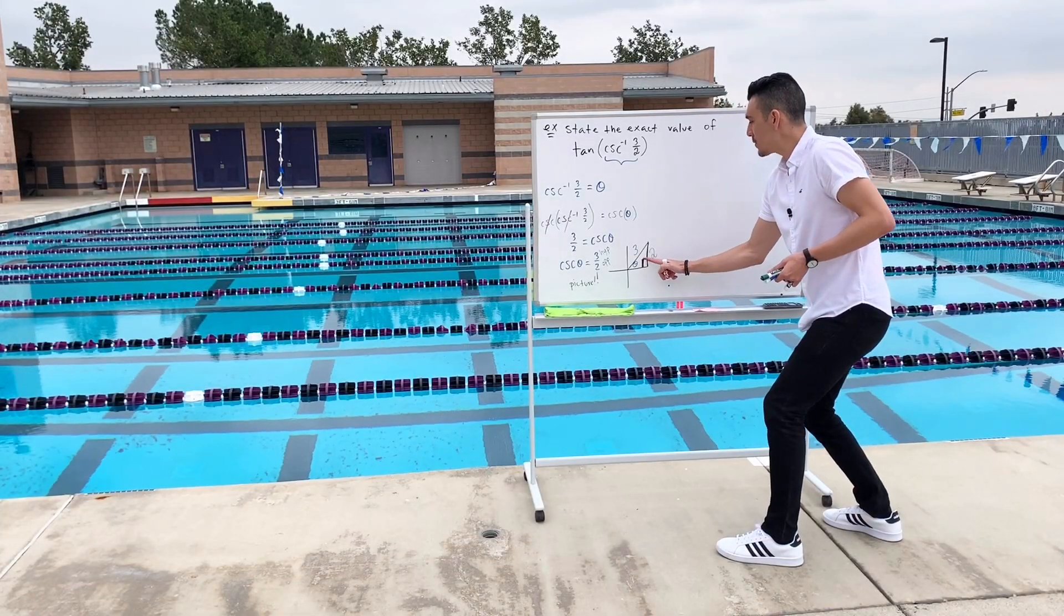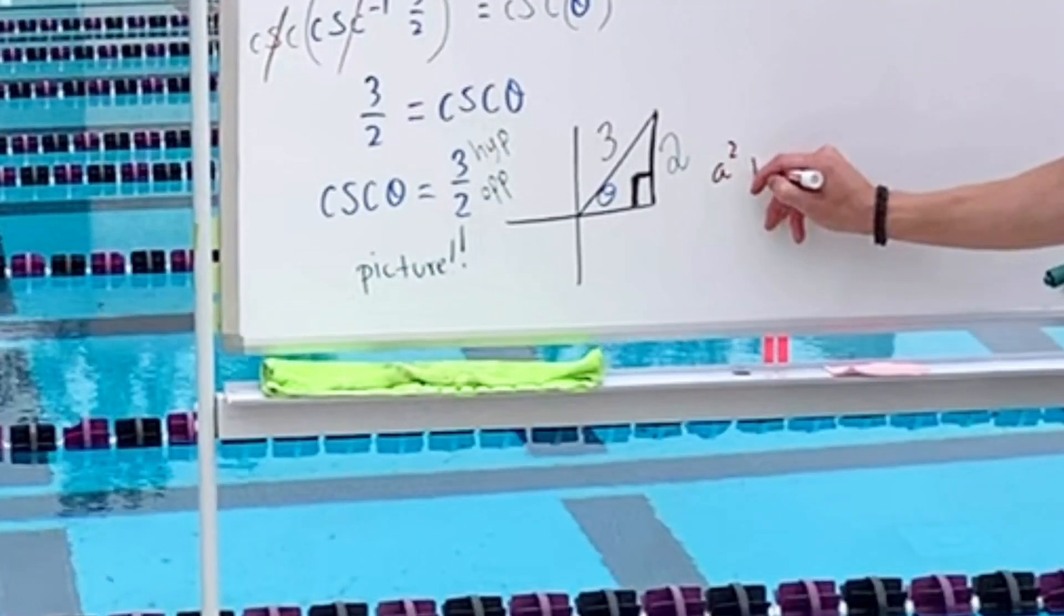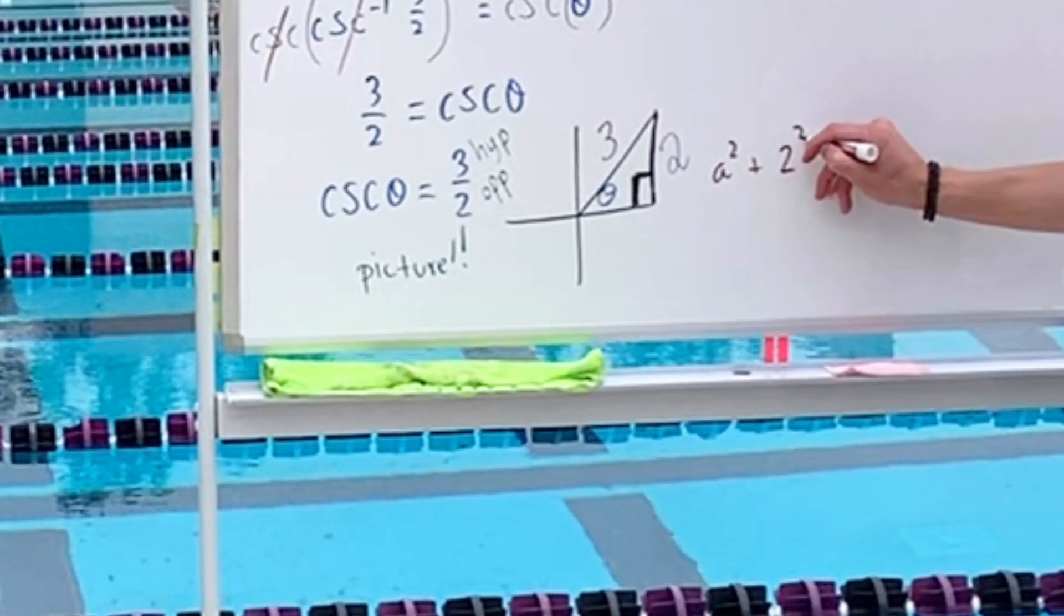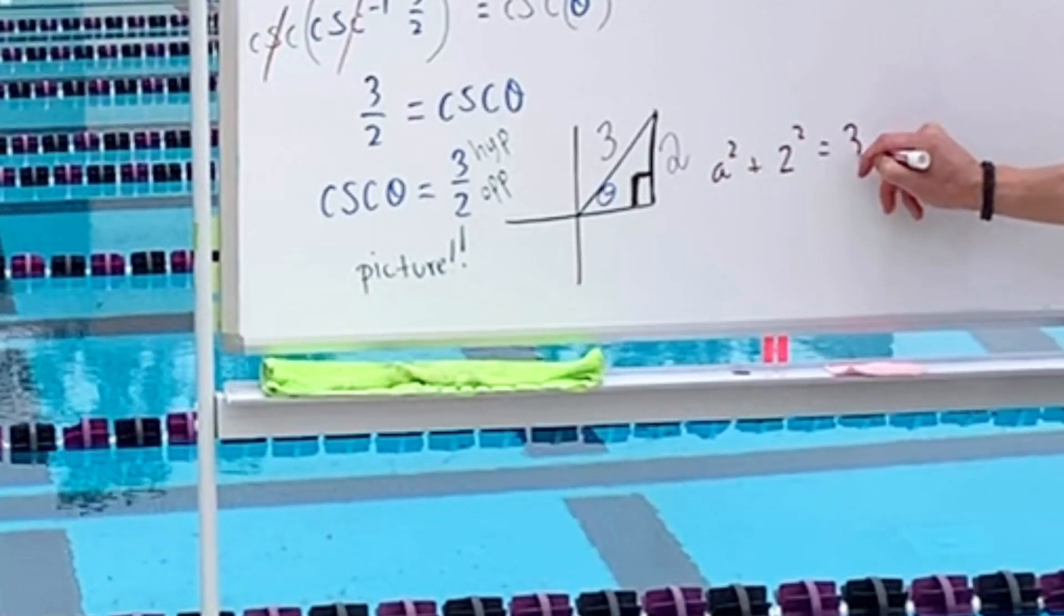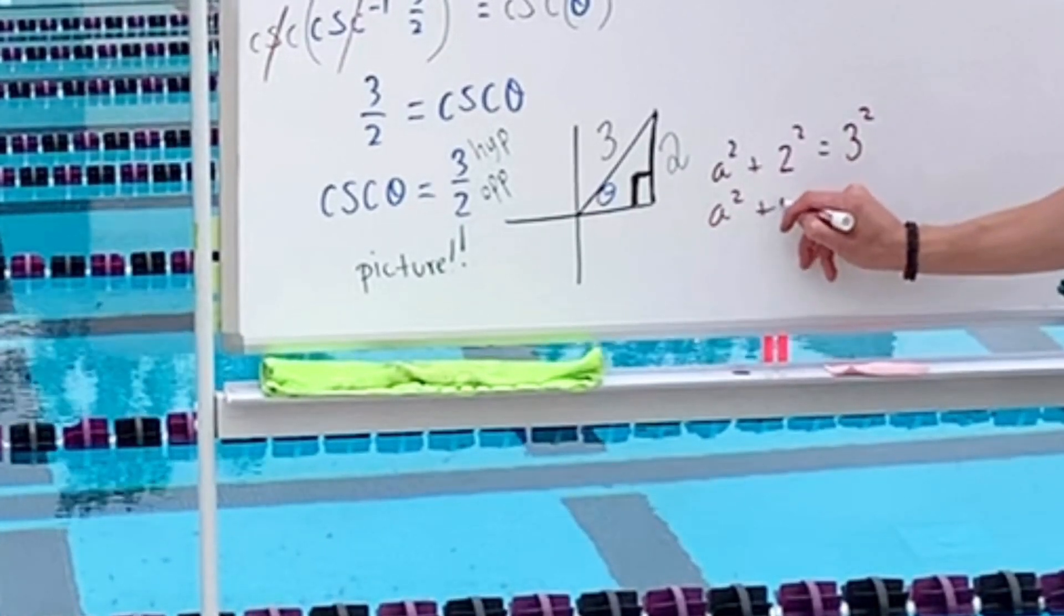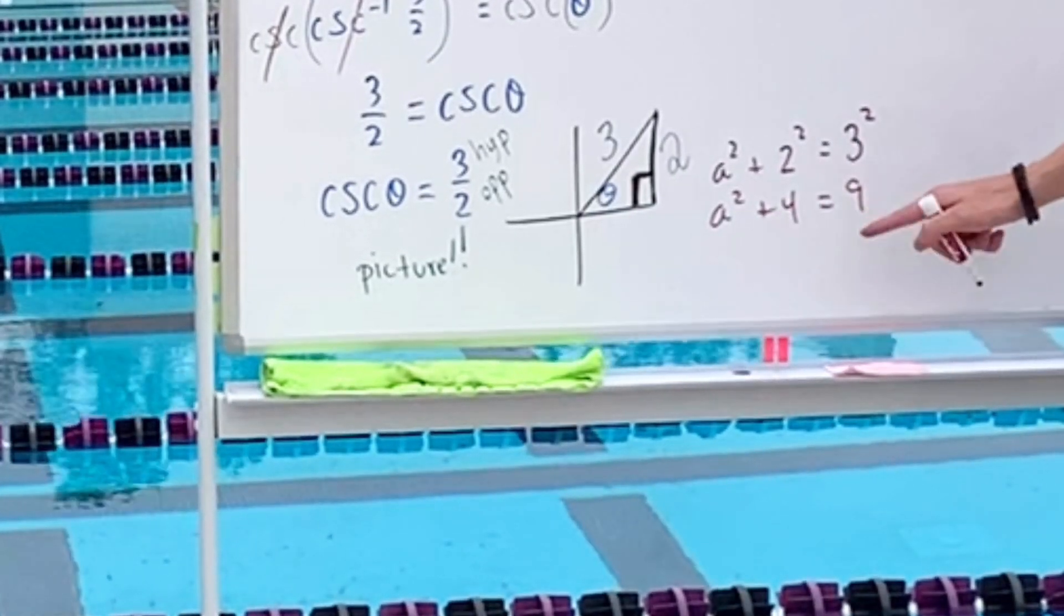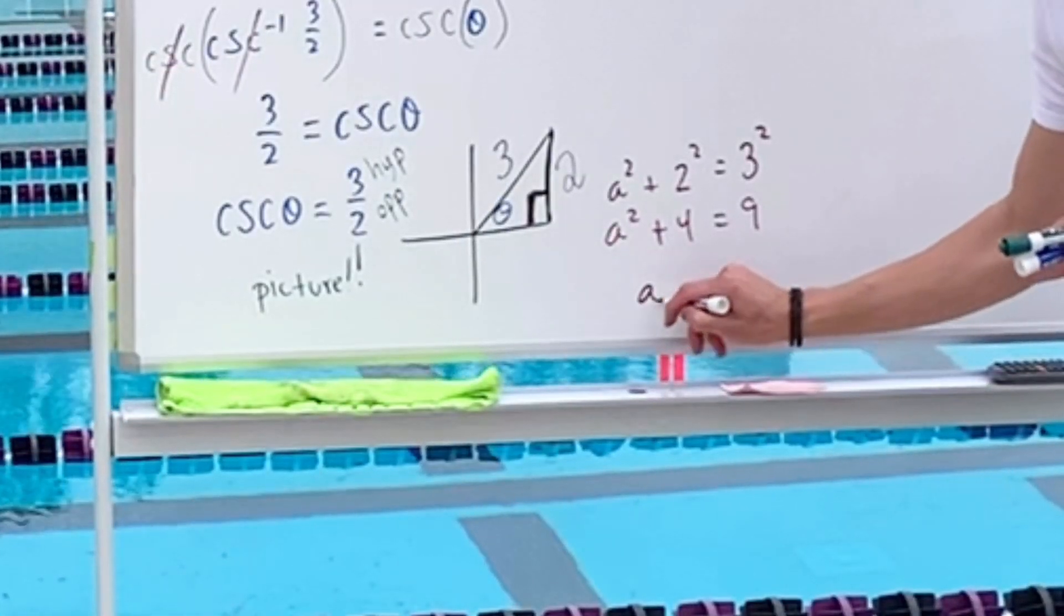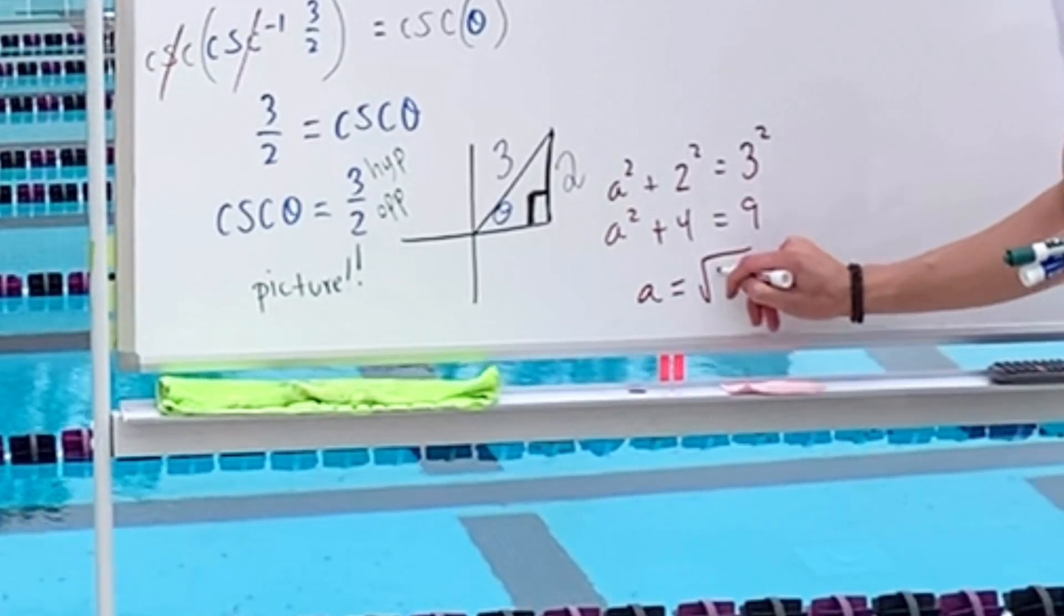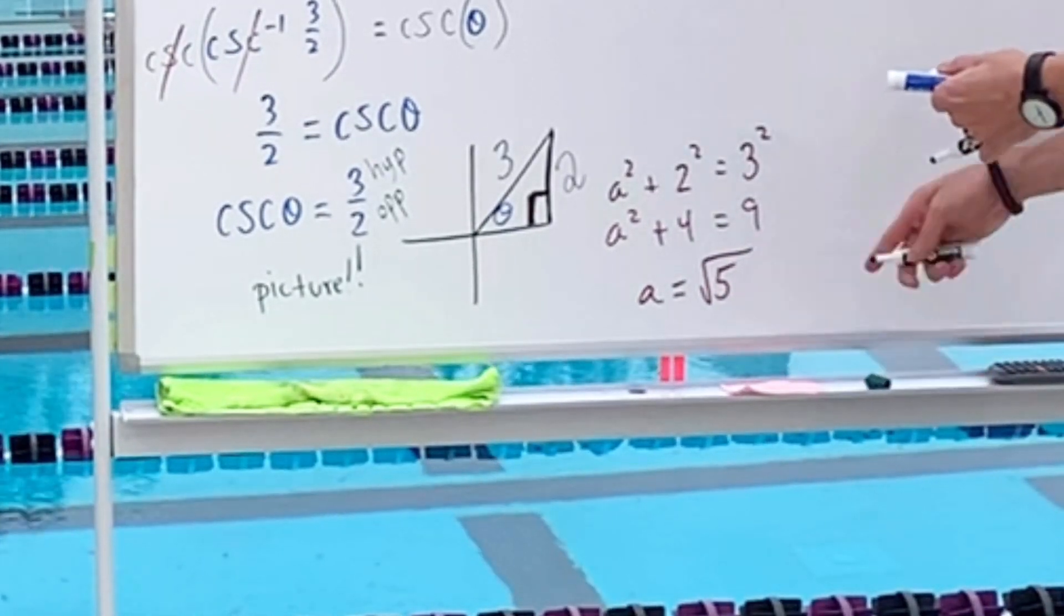You can go a squared, b squared, c squared. So we have a squared plus b squared equals c squared. Plus four equals nine. Subtract the four. So a equals square root of five. And that, of course, goes right here.